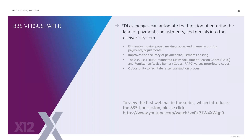EDI exchanges can automate the function of entering the data for payments, adjustments, and denials into the receiver system. Replacing that paper, you're getting rid of manual posting, which takes a lot of time and effort and can open up mistakes. So it improves accuracy by eliminating keying mistakes. The 835 uses the HIPAA mandated code list — it's codified, so the same code means the same thing across the entire industry.